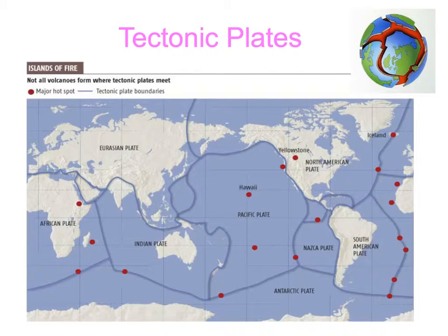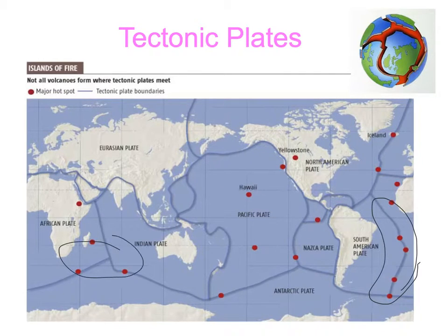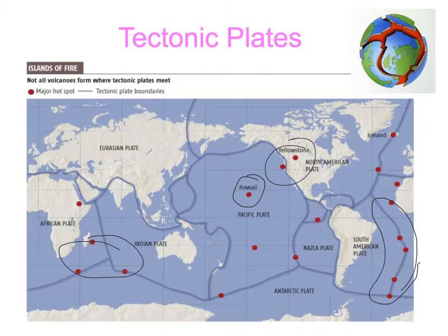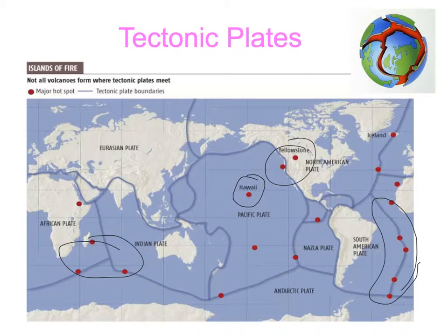The crust of the earth is divided into tectonic plates. Looking at this diagram, we can see that where we have tectonic plate boundaries, we have certain hot spots for volcanoes and earthquakes. It must be noted that not all volcanoes occur at the edge of a tectonic plate — for example, Hawaii is in the middle of the plate, yet there's a volcanic island there. But generally, the plate boundaries are regions of earthquakes, volcanoes, and constructive plate boundaries.